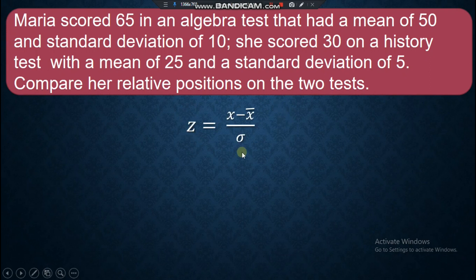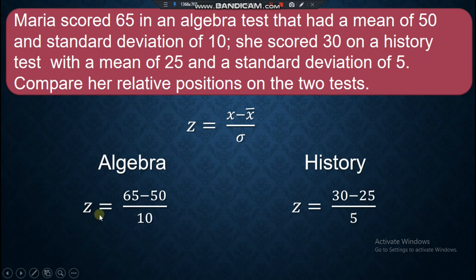We will now solve for algebra and history the Z-score. The Z-score for algebra: the score is 65, the mean is 50, and 10 is the standard deviation. While in history, the score is 30 minus the mean, all over 5 as the standard deviation. We will have the answer: Z-score is 1.5 for algebra, 1.0 for history.